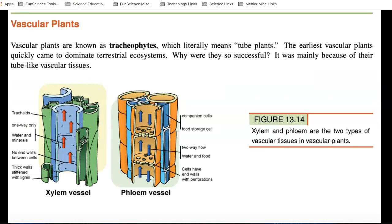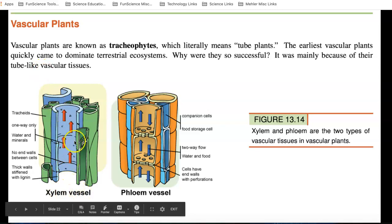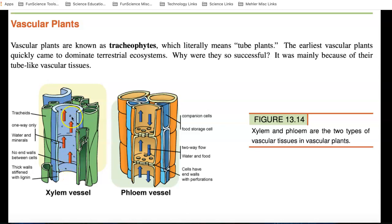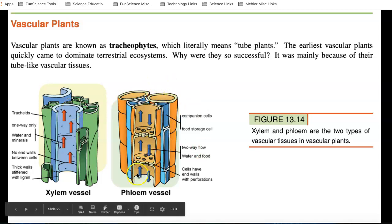Vascular plants, known as tracheophytes, which literally means tube plants, the earliest vascular plants quickly came to dominate terrestrial ecosystem. Why were they so successful? Because they had an efficient way of moving water and nutrients through the plant. For example, the xylem vessel here, this is inside a plant, like in a stem or a leaf, is moving materials up. Whereas, over here, the phloem moves it in two directions. Xylem can just move it in one direction.